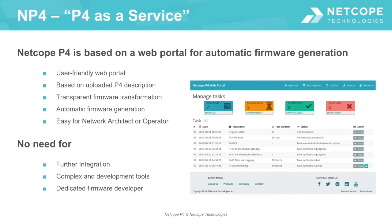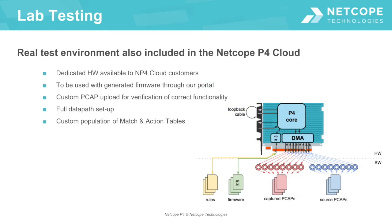No dedicated firmware developer is necessary — the design can be carried out by a network architect or operator. To make the process of firmware preparation complete, the NP4 cloud service includes a real test environment. A Netcope 100G FPGA card is ready in the cloud for customers to be loaded with generated firmware. Sample traffic preloaded from custom PCAP files is transferred to the card, processed with the generated P4 core, and transferred back to the host server for verification of correct functionality. A loopback cable on the network interface of the card allows transmitting traffic out of the card and receiving it back, so customers can be sure that the whole data path works according to their expectations.